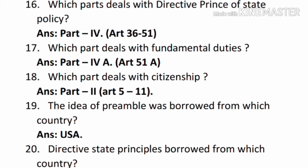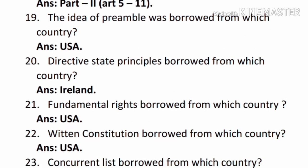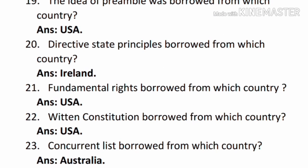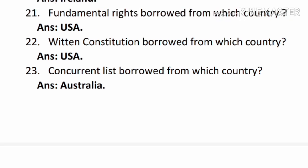Question number eighteen: which part deals with citizenship? — Answer: Part 2, Article 5 to 11. Question nineteen: the idea of the Preamble was borrowed from which country? — Answer: USA. Question twenty: Directive Principles were borrowed from which country? — Answer: Ireland. Question twenty-one: fundamental rights were borrowed from which country? — Answer: USA. Question twenty-two: judicial review was borrowed from which country? — Answer: USA.